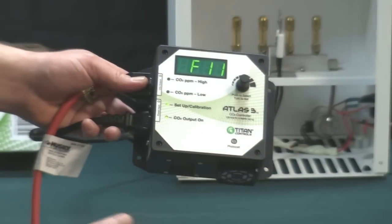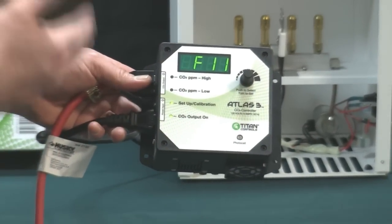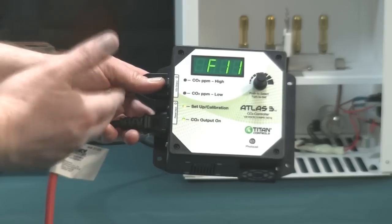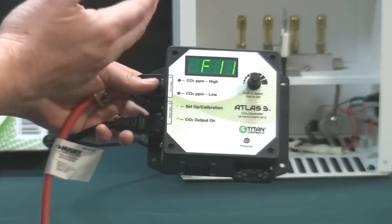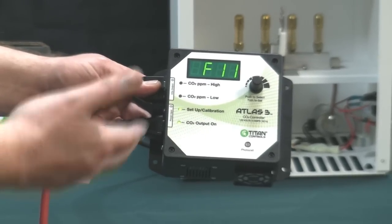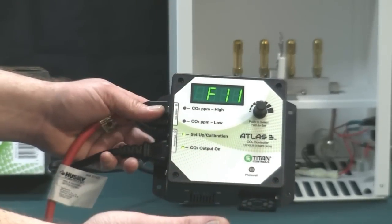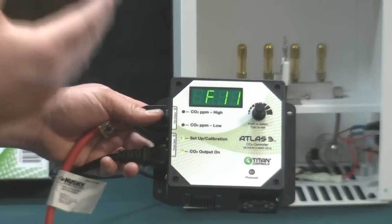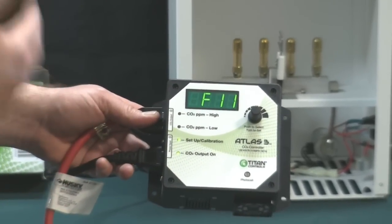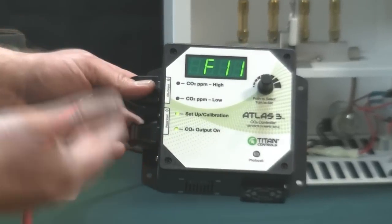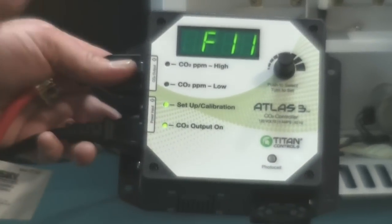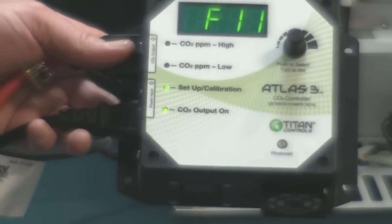The next button down here, this puts it in the F11 mode. This is for a daytime only mode. It has a daytime only mode for CO2 enrichment, a nighttime only mode for CO2 enrichment, a day and night mode for CO2 enrichment, or it can be used as a night only evacuation of CO2, a day only evacuation of CO2, or a day and night evacuation of CO2.